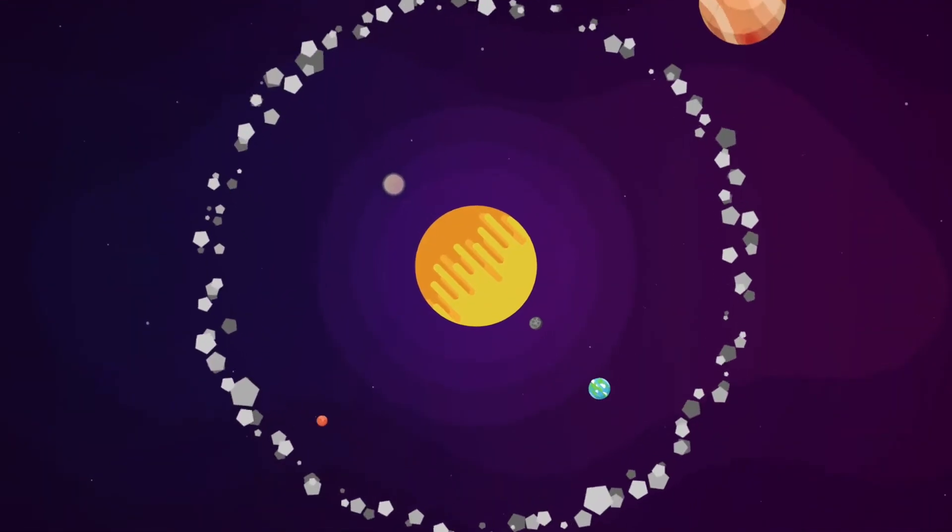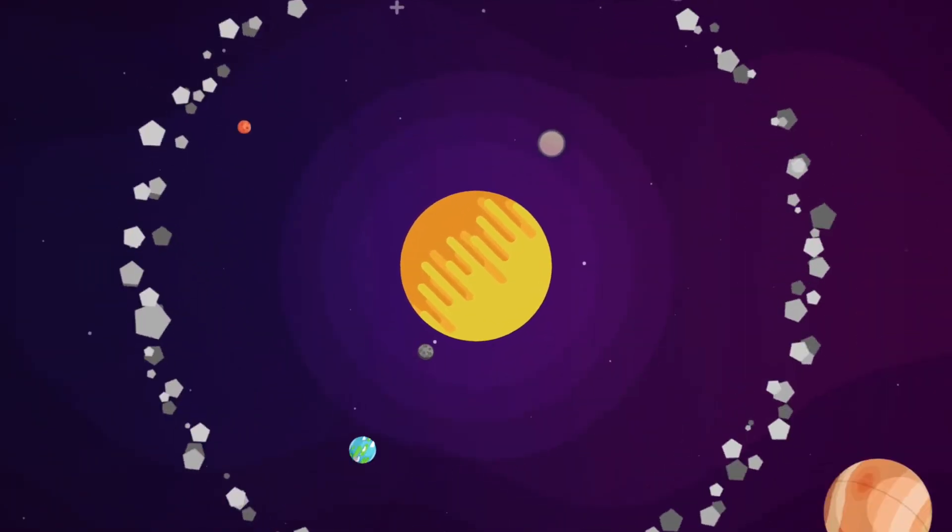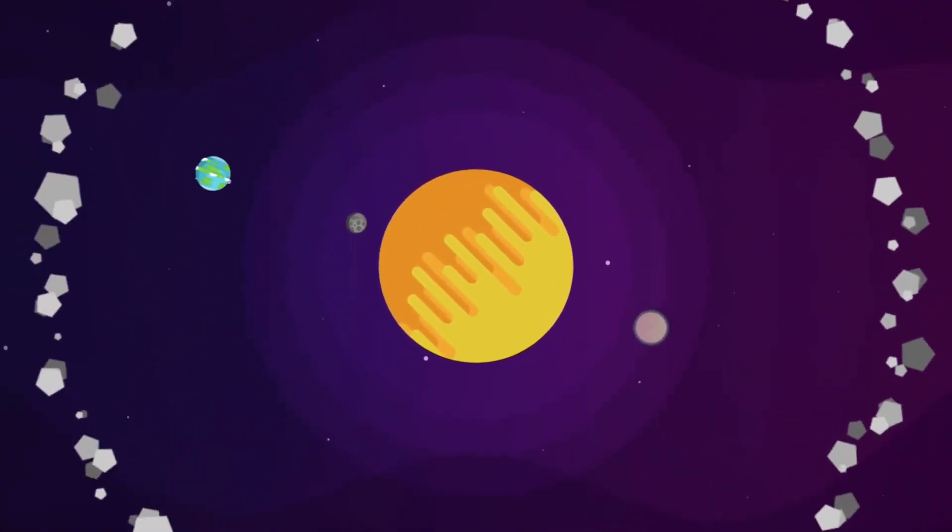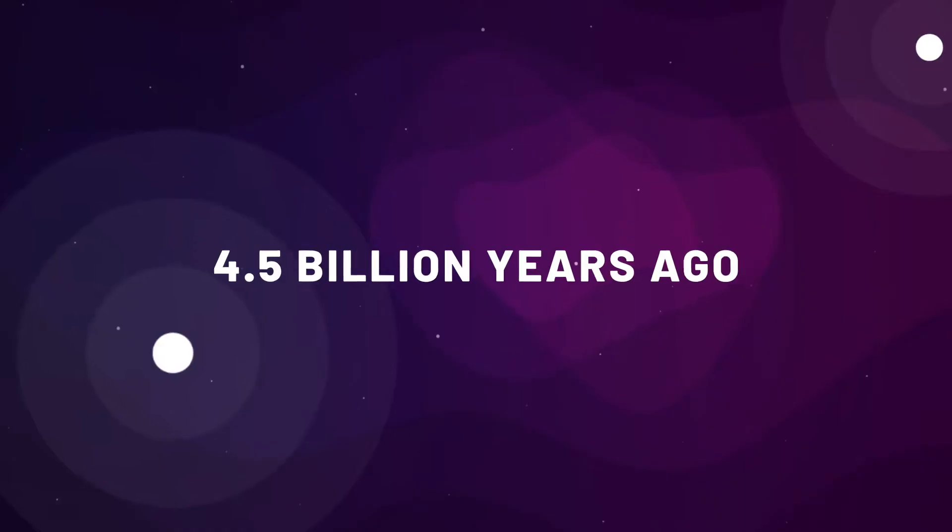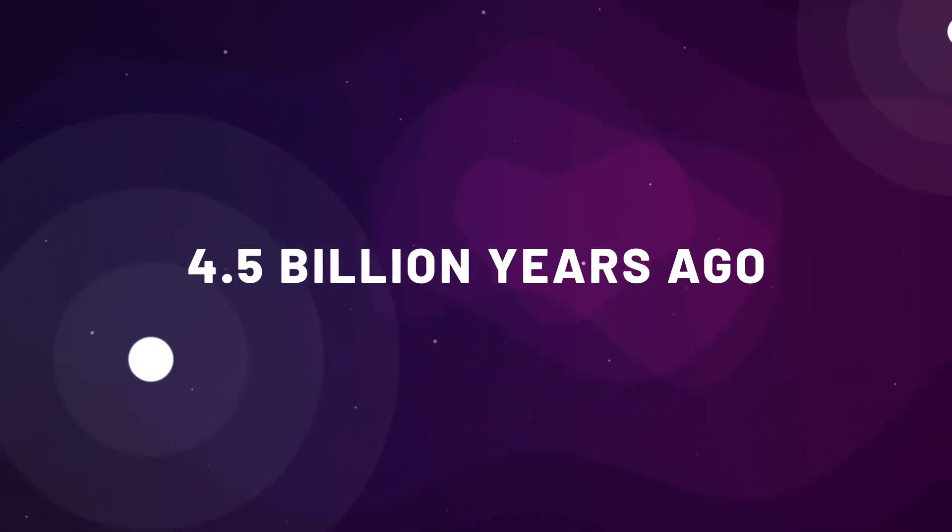So today's astronomers are far more convinced that the asteroids are the leftover unused materials from our solar system's early formation, some four and a half billion years ago.